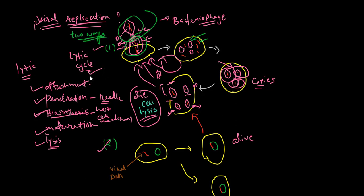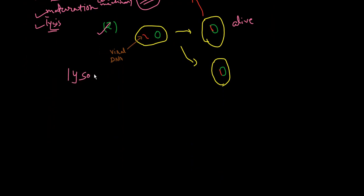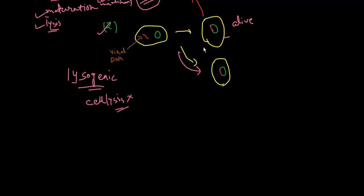The second cycle is the lysogenic cycle. In this cycle, the cell is not lysed — instead, the viral DNA integrates into the host genome. Some viruses do not cause lysis and destruction of their host cell. These viruses are called lysogenic phages, and they establish a stable, long-term relationship with their host.